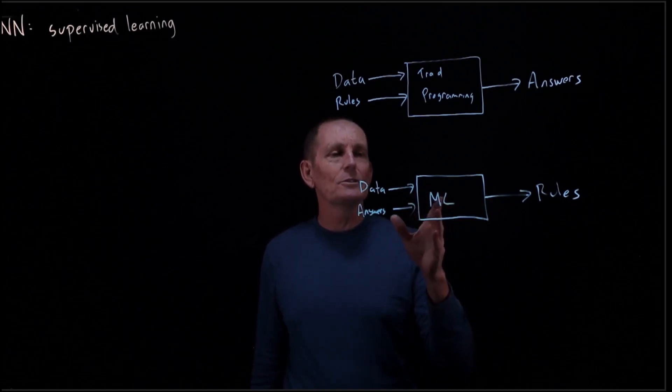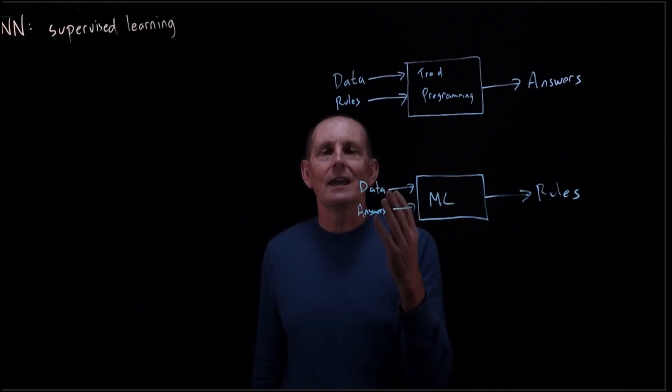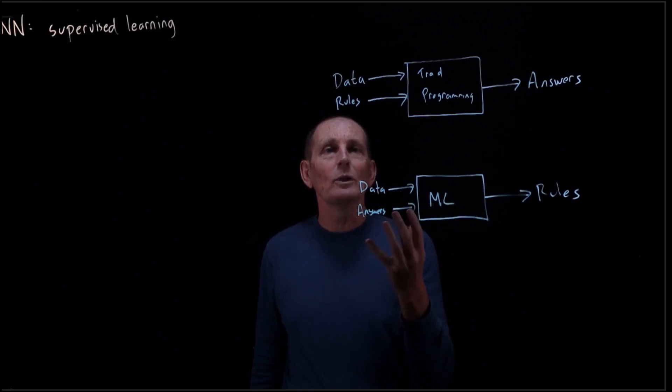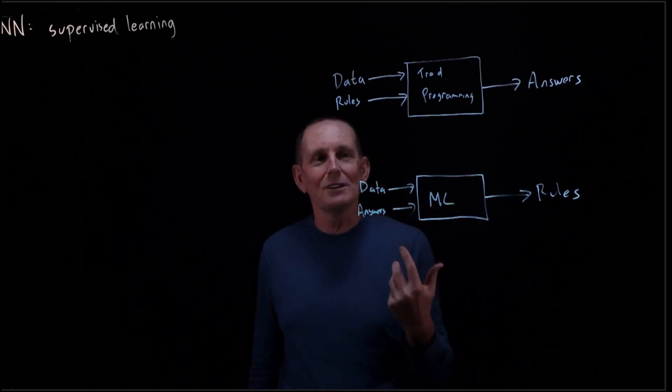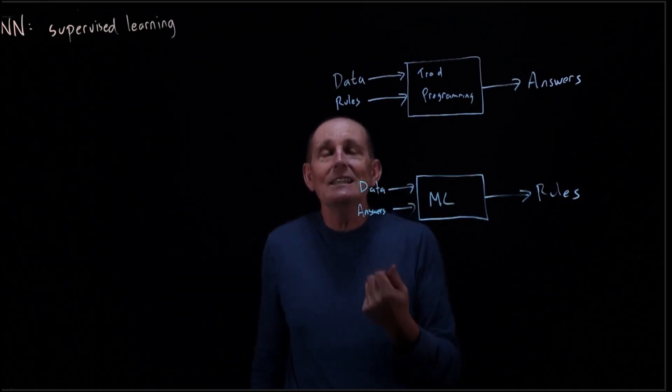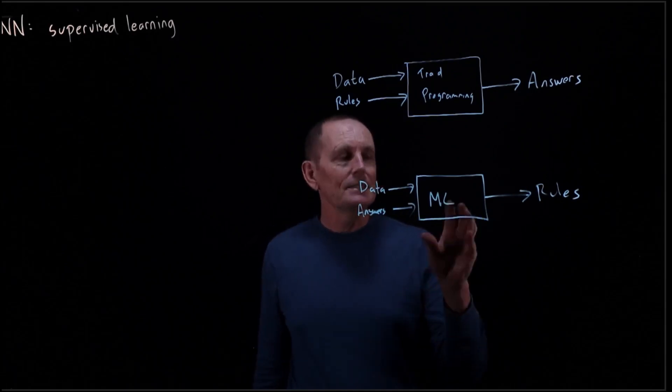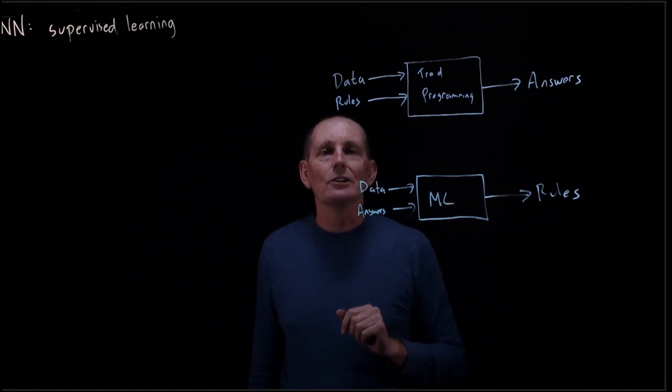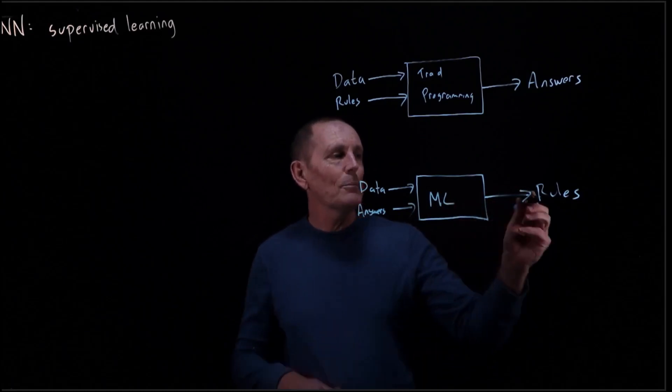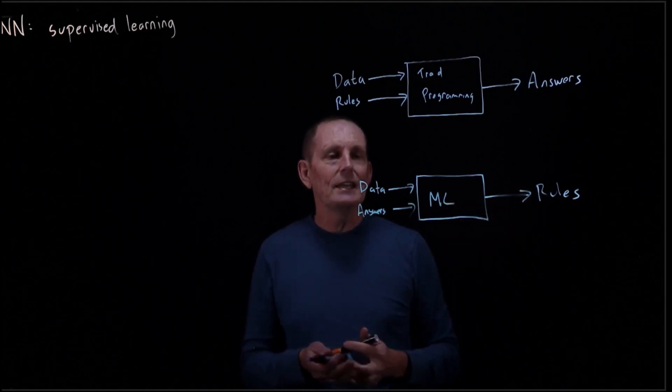In machine learning, it's somewhat different. What we do is we say we've got data and paired answers, and we want to go ahead and figure out what the rules are, because we don't have an easy way to explicitly specify what those rules are. Instead, machine learning learns these rules. So coming up with the rules, given data and answers, is called training.